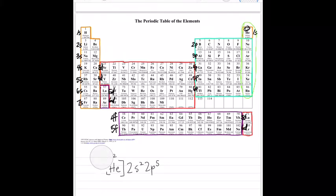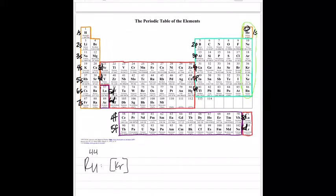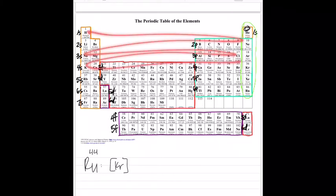Let's do ruthenium, which is number 44. So ruthenium is here. We're not going to go forward to our nearest noble gas, we're going to go above it. So the nearest noble gas above it is krypton. So you put krypton in brackets. Now, everything before krypton, I don't have to write down. That's the great part about this.